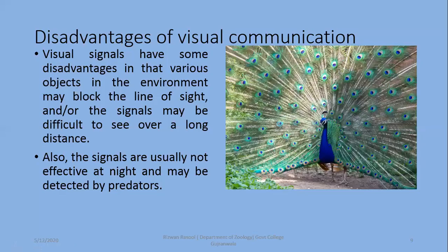There are some disadvantages of visual communication. Visual communication is more efficient in daytime and daylight. Various objects in the environment may block the line of sight — some tree or barrier can stop it. There is a specific distance where vision works in daylight. Visual signals are not effective at night. Additionally, if an animal displays visually, it may also be easy for predators to identify it.